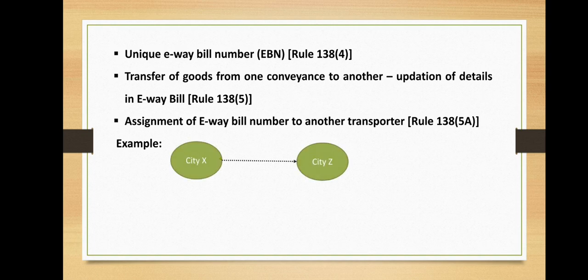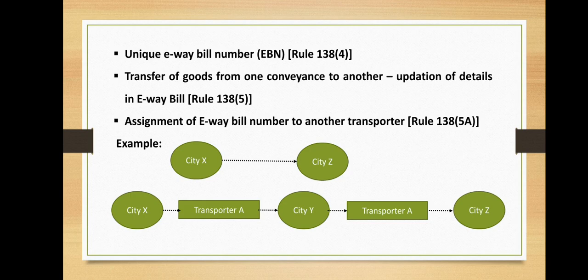For example, a consigner is required to move goods from city X to city Z. He appoints Transporter A for the movement of his goods. Transporter A moves the goods from city X to city Y. For completing the movement from city Y to city Z, Transporter A hands over the goods to Transporter B, who then moves the goods to the destination. In such a scenario, only one e-way bill is required. Part A can be filled by the consigner and the e-way bill assigned by the consigner to Transporter A. Transporter A fills the vehicle details in Part B and moves the goods from city X to Y. On reaching city Y, Transporter A assigns the e-way bill to Transporter B, who then updates the details in Part B and moves the goods from city Y to city Z.